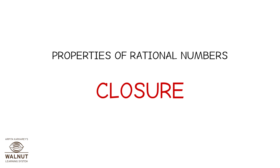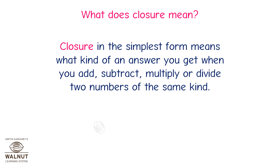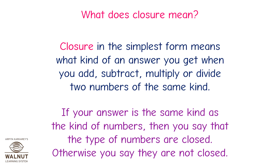Properties of Rational Numbers — Closure. What does closure mean? Closure in the simplest terms means: what kind of answer you get when you add, subtract, multiply, or divide two numbers of the same kind. If your answer is the same kind as the numbers, you say that type of numbers is closed. Otherwise, you say they are not closed.